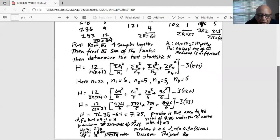I go to second VARS, and then I scroll down to chi-square CDF. My lower is 7.35. My upper is a very large number, 1E99, because it's a right tail test. Degrees of freedom is 3. When I press enter, the p-value works out as 0.06. This is the area to the right of 7.35 under the chi-square curve with degrees of freedom three.